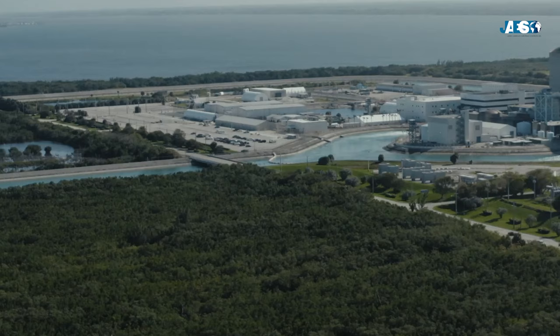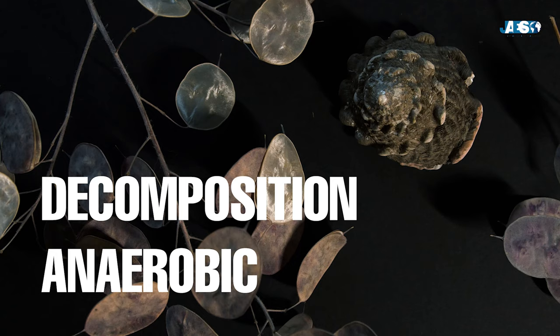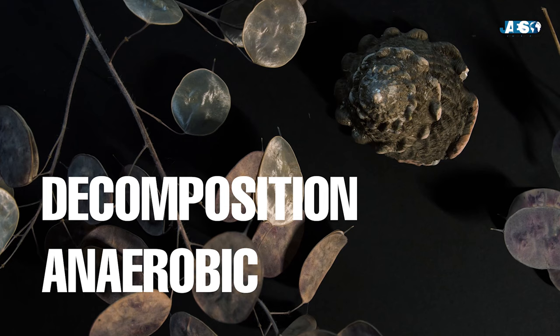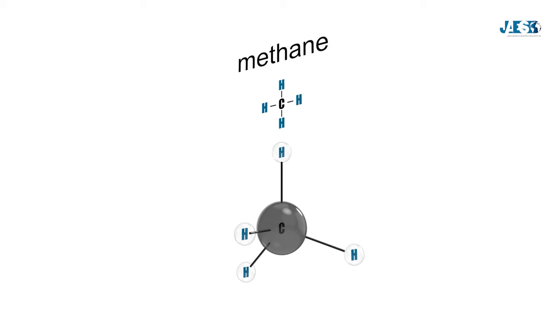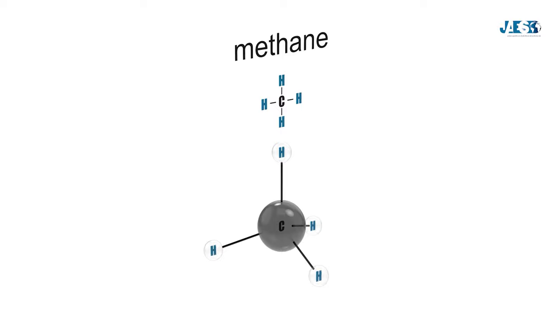Fossilized natural gas can be found in deposits and it is produced from anaerobic decomposition of organic material. It is mostly composed of methane, the smallest out of all hydrocarbon molecules. However, it can also contain ethane, propane, and butane as well as small quantities of pentane.